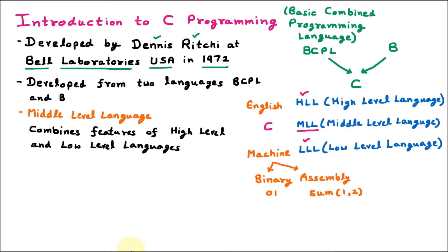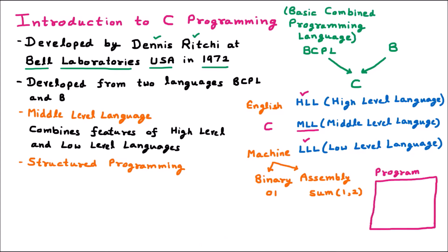C is called a Structured Programming Language. For example, a C program has a main function — one block for main. We can also have another function, such as one dedicated to finding the sum of two numbers. Everything is properly modularized. This first module and second module, or block, each serve a separate purpose.